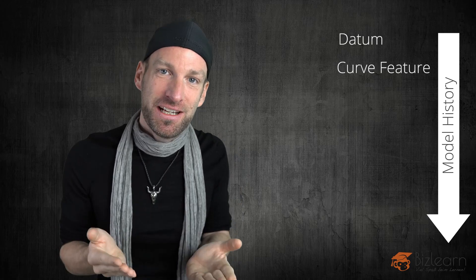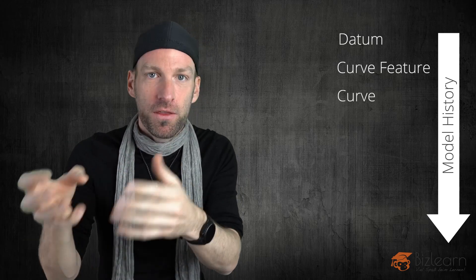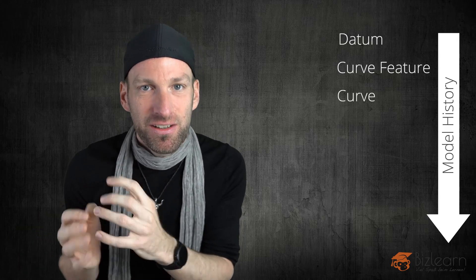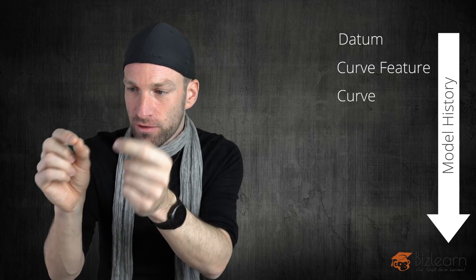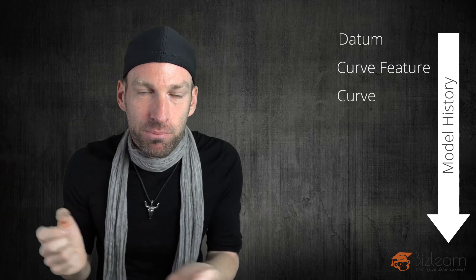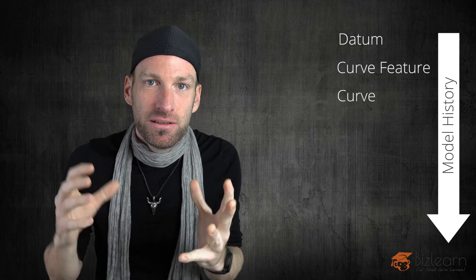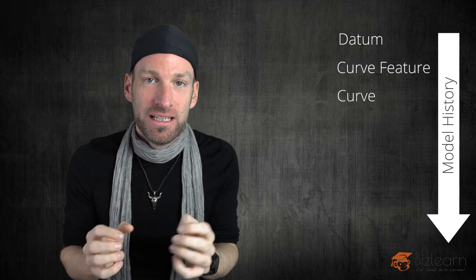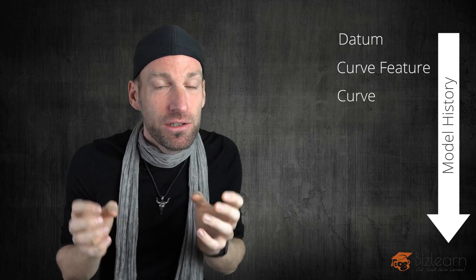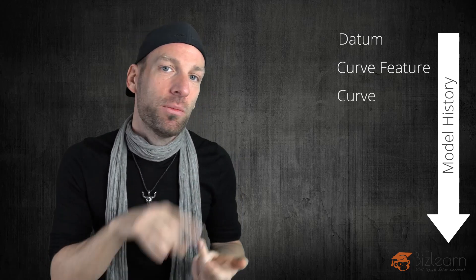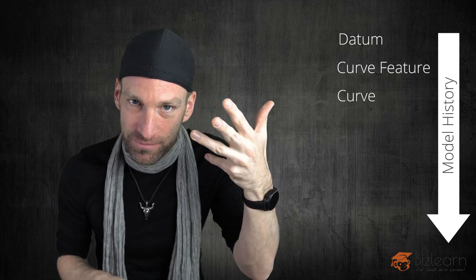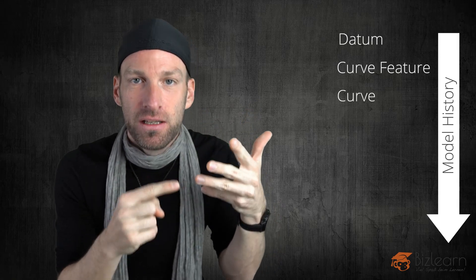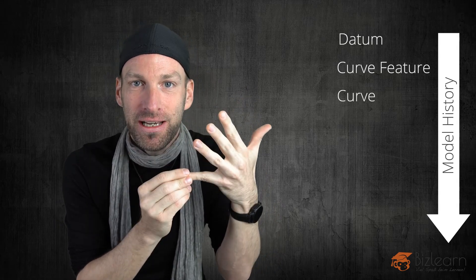So after the sketch comes the curve or the point. Point is a curve as well in Siemens NX. Point and curve is the same. It's the same classification. And the only difference is that a curve exists of several points and a point is only one point. It has no direction. It has no size etc. It's just a point in order to define a position. But it's still a curve. The relation you create to a point is the same kind of relation you create to a curve. So we've got coordinate system. We've got the sketch. We've got curve next. So the curve is newer than the sketch. The sketch is older than the curve.